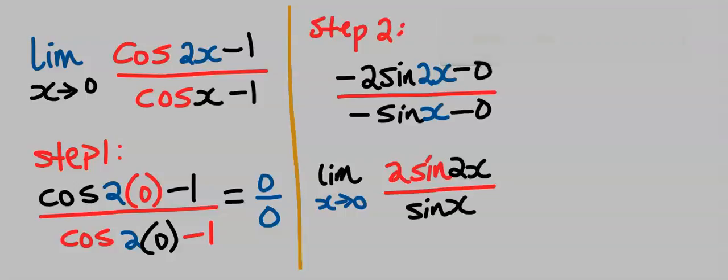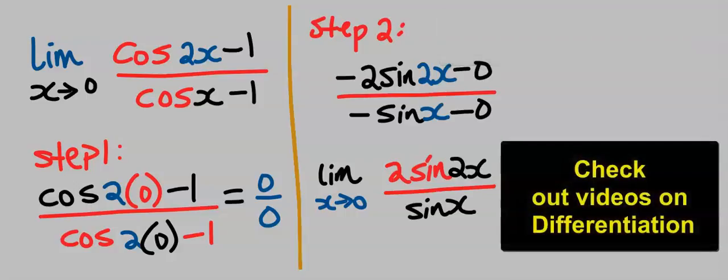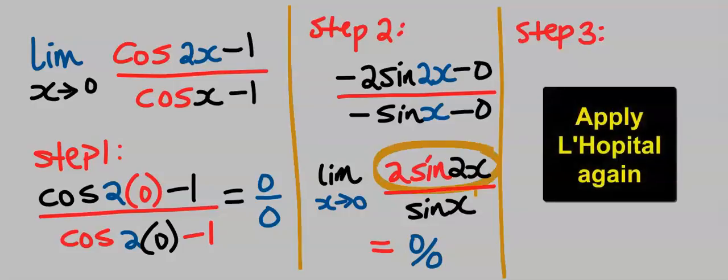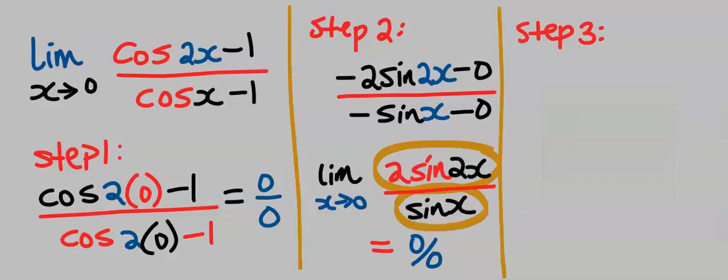Next, we take the limit of the differentiated value, and we obtained zero over zero again. Step three, we are going to differentiate each of this variable separately.